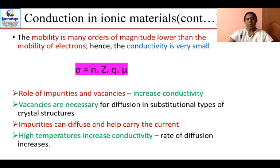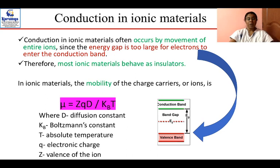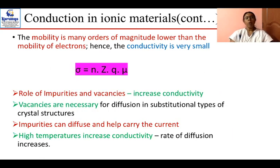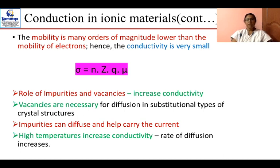A new term here is the valence of the ion. Regarding the role of impurities and vacancies: unlike pure conductors, in ionic materials — mostly metal oxides or metal combinations — impurities and vacancies matter a lot. Impurities and vacancies increase the conductivity; vacancies are necessary for substitution-type crystal structures, and impurities can diffuse and help carry the current.